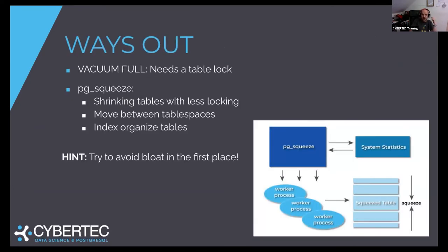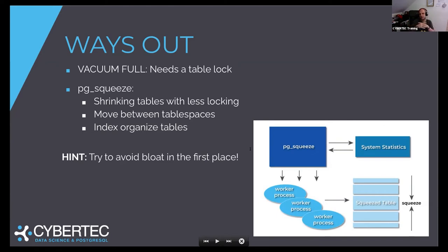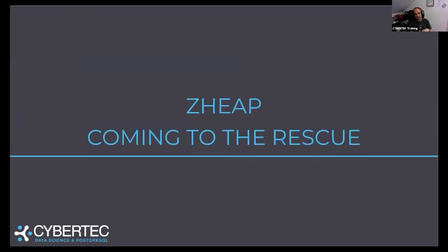PG Squeeze is one way out, because you can always run VACUUM FULL to shrink your table, but it needs a very extensive, long table lock. One way to get around this is to use PG Squeeze, which can basically shrink a table in place and reduce this table lock as much as possible. But you shouldn't have to get to a point where VACUUM FULL is needed in the first place. So Z-Heap is coming to the rescue.